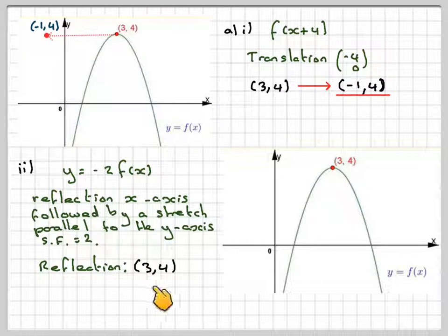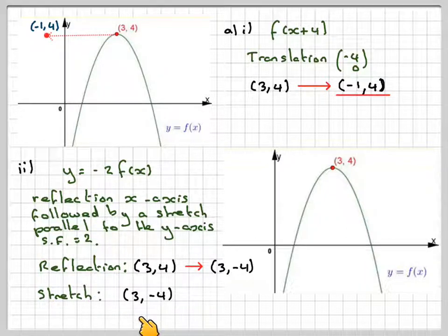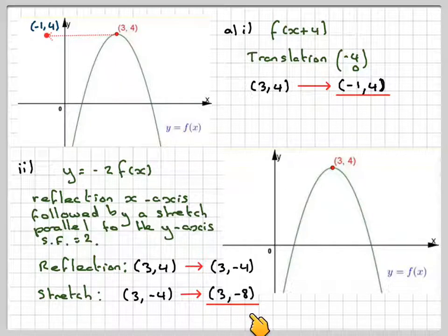So the reflection will take (3, 4) to (3, -4), and the stretch will take it down from -4 to (3, -8).